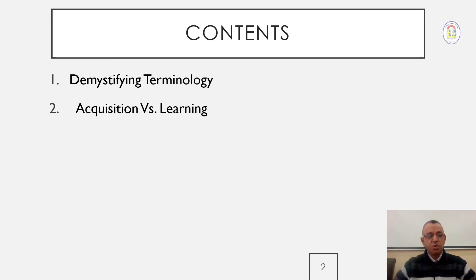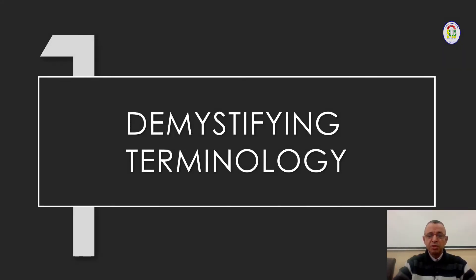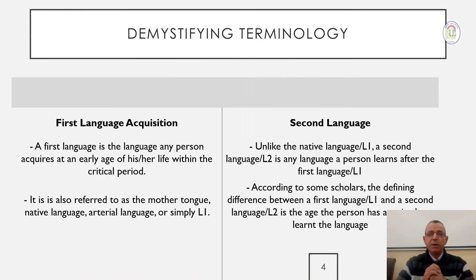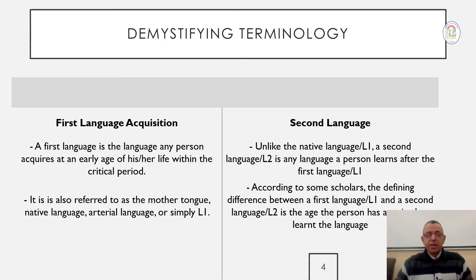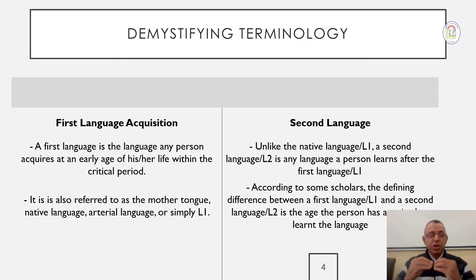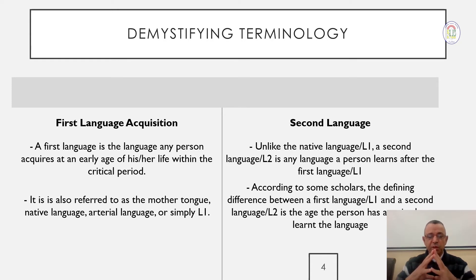Now, let's start with some relevant terminology and try to demystify it as it relates to language acquisition. We have two first terms: first language acquisition and second language acquisition. When we talk about the first language, generally it is the language that we acquire at an early age of our life within the critical period. It is also referred to as the mother tongue, native language, arterial language, or simply L1.